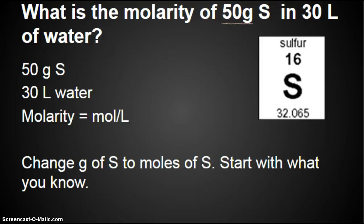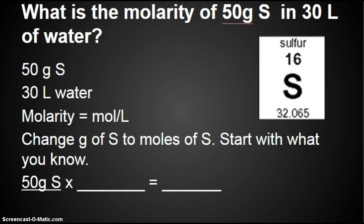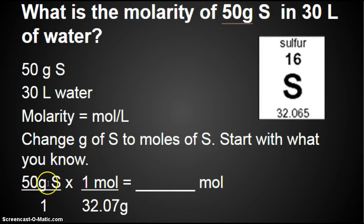We start with what we know, which is 50 grams of sulfur. Then we're going to put this 50 grams over 1. What's going to be the unit on the bottom of my next fraction? I want it to cancel, so the unit down here has to be grams of sulfur. And what do I want my final answer in? I'm converting to moles. So 1 mole is 32.07, right? I got that from the periodic table. In your calculator, you would put 50 divided by 32.07, and that gives you 1.56 moles of sulfur.